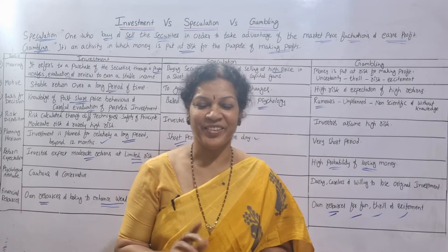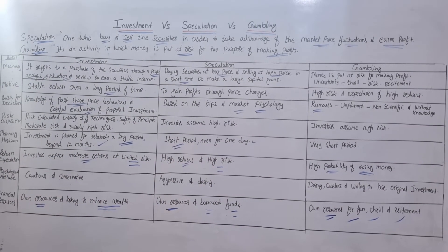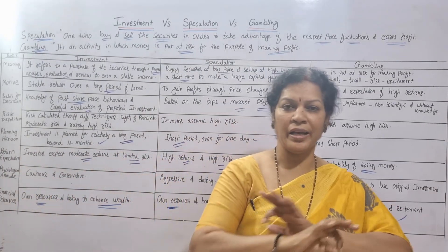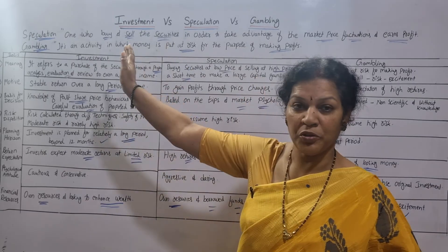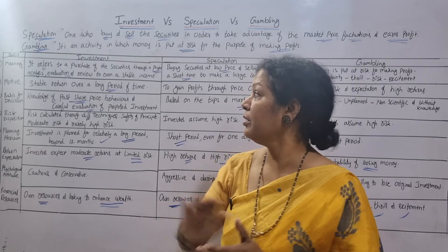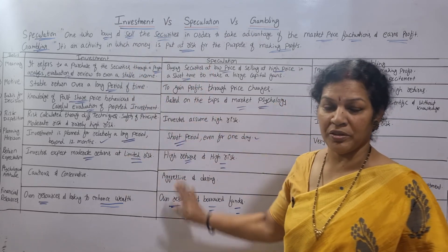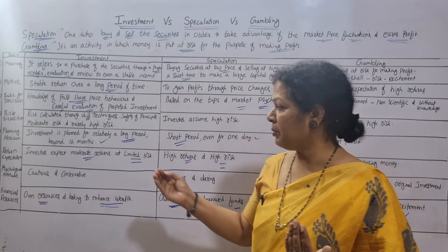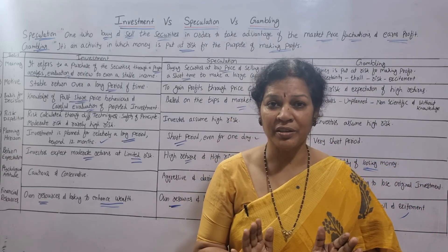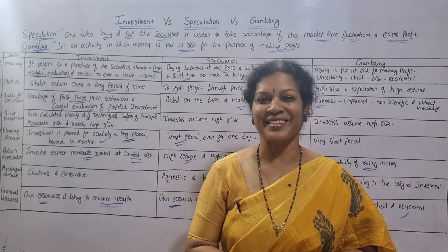Take a screenshot of this table for your reference. In the exam, first write the definitions of speculation, gambling, and investment, and then write the comparison on whichever basis is asked — investment versus gambling, or investment versus speculation — using the same points. You can extend each point with one or two sentences. Hope it is clear. Stay connected — more topics from investment management are coming. Don't forget to share this video. Good luck!